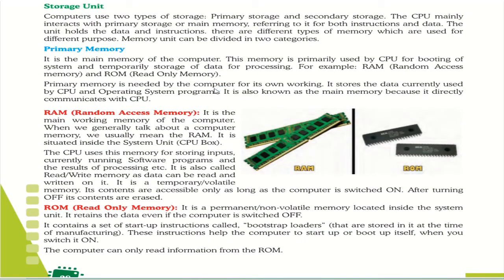Next is the storage unit. Computers have two types of storage: primary storage and secondary storage. The CPU mainly interacts with primary storage, also called main memory. Secondary storage is also known as auxiliary memory. In both memories we can give instructions and data, but there are different types of memory used for different purposes — categorized as primary memory and secondary memory.